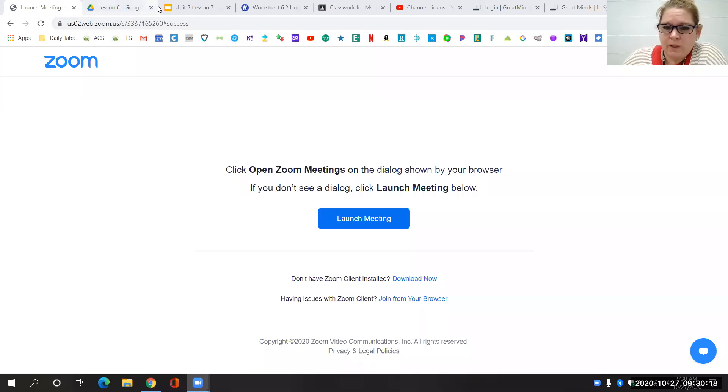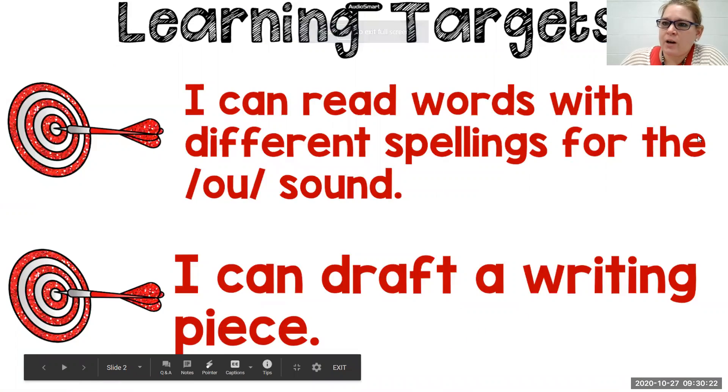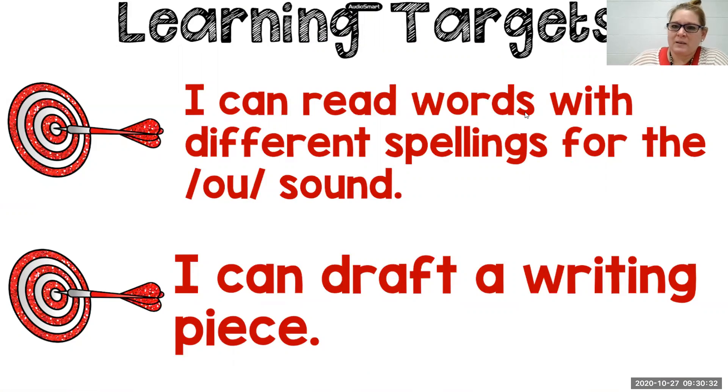Good morning. It is Tuesday morning and we are on Lesson 7 of Unit 2 today. We are going to go ahead and get started quickly. Our learning targets for today are: I can read words with different spellings for the ow sound, and I can draft a writing piece.